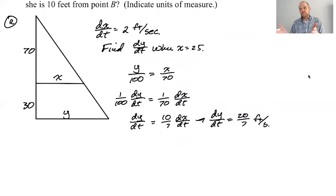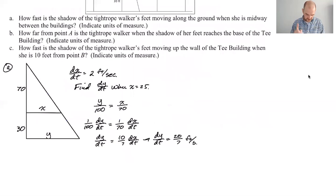There you go, that's your shadow, so the shadow is moving, this is lengthening by 20 over 7 feet per second when she is 25 feet halfway between the buildings.